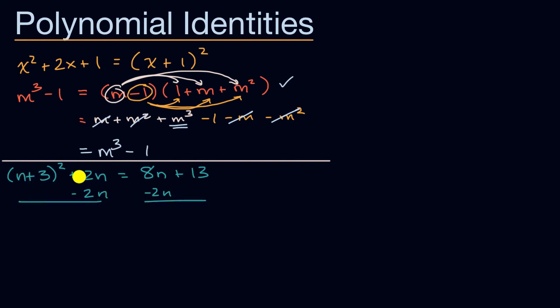I am going to get on the left-hand side, n plus 3 squared. And on the right-hand side, I am going to get 6n, 8n minus 2n, plus 13.